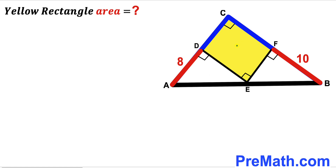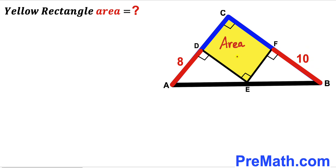Welcome to PreMath. In this video we have a yellow shaded rectangle CDEF fully inscribed in a right triangle ABC, such that segment AD has a length of 8 units and segment FB has a length of 10 units. Our task is to calculate the area of this yellow shaded rectangle CDEF.